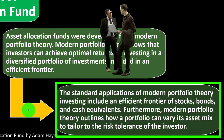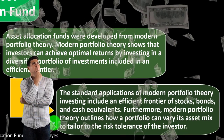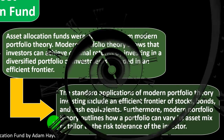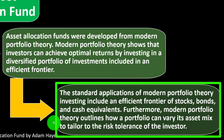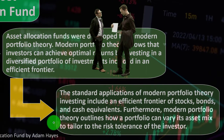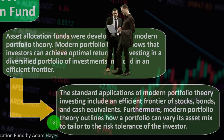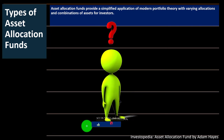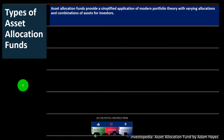Modern portfolio theory also outlines how a portfolio can vary its asset mix to tailor to the risk tolerance of the investor. Typically when putting money into a mutual fund, we consider the time horizon — often saving for retirement — and how long until retirement. We can then think about the optimal mix for that time horizon and modify it based on risk tolerance: how much risk you're comfortable taking on. These are typically the questions asked when picking a portfolio for an IRA or 401(k).